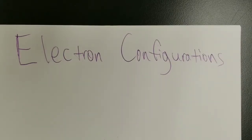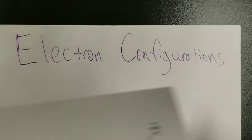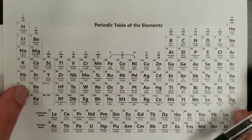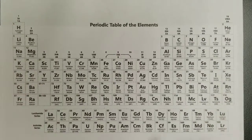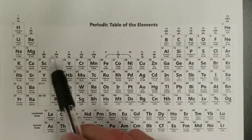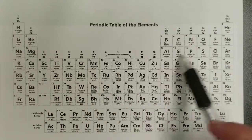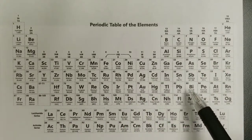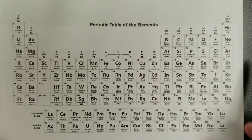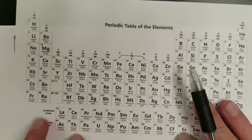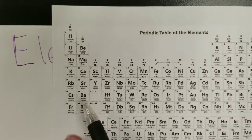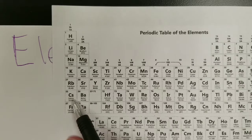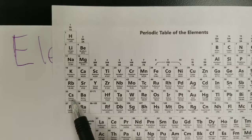Let's talk about how to do electron configurations. On the periodic table, you've got all these different elements, and you will be expected to be able to come up with an electron configuration for largely any of these elements. Let's take cesium as an example — element number 55. A neutral cesium atom has 55 electrons.